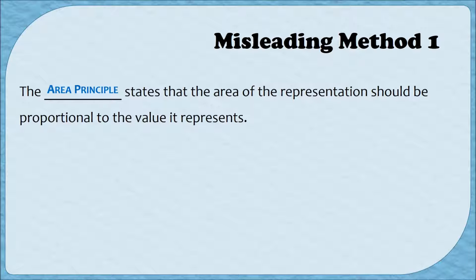The first misleading method we're going to talk about happens when you abuse a principle called the area principle. The area principle states that the area of the representation should be proportional to the value it represents. In other words, if item B happens twice as often as item A, you want the representation for item B to be twice as large as the representation for item A.